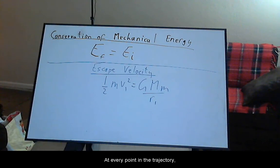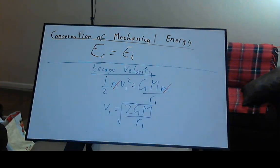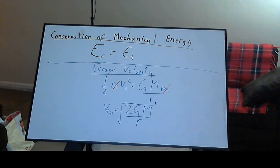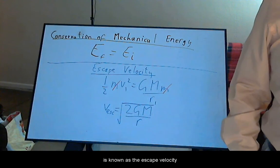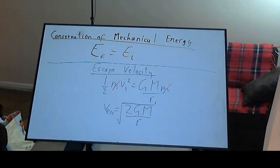At every point in the trajectory, the kinetic energy is equal to the magnitude of the gravitational potential energy. We simplify and solve for velocity. This is known as the escape velocity from mass m from a distance r.